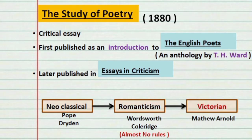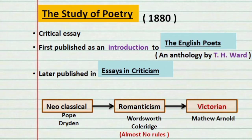Let's see what influenced Arnold to write this essay. The neoclassical period was a time when writers had to follow a lot of rules when writing a poem. Writers like Pope and Dryden had to keep certain rules and standards. This was followed by Romanticism, during which writers like Wordsworth and Coleridge believed that those enforced rules made works look very artificial. For these writers, poetry was a spontaneous overflow of powerful emotions, and they started to write in ordinary language about ordinary life experiences.